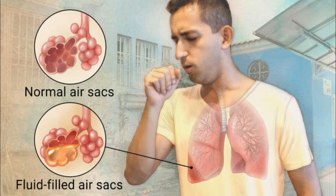Additional prevention measures include HIV prevention and cotrimoxazole prophylaxis for HIV-infected and exposed children. Treatment efforts focus on making sure that every sick child has access to the right kind of care, either from a community-based health worker or in a health facility if the disease is severe, and can get the antibiotics and oxygen they need to get well.